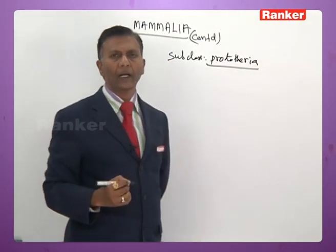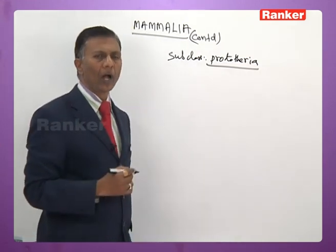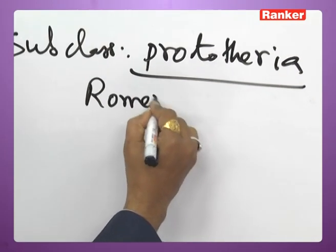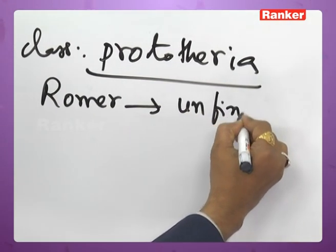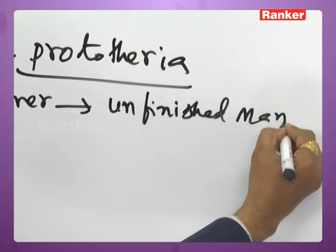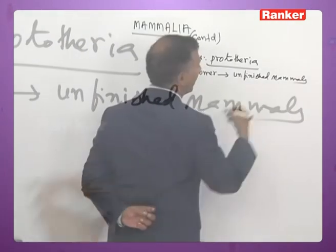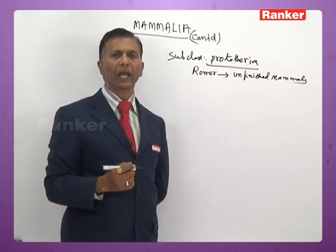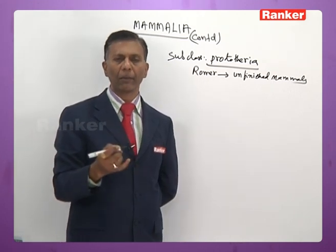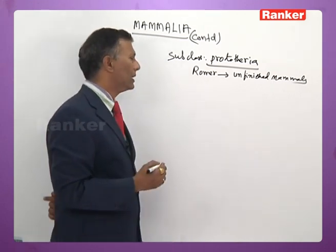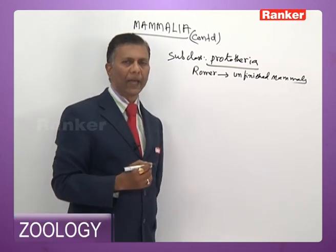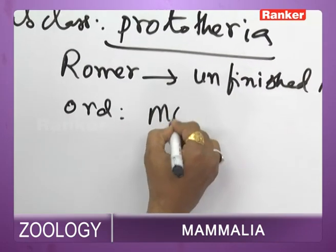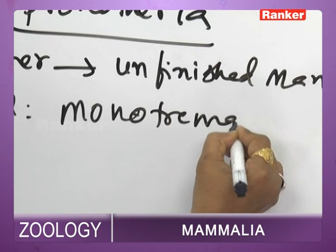Subclass Prototheria — prototherians are called 'unfinished mammals' as they exhibit both reptilian and mammalian characters, making them the connecting link between Mammalia and Reptilia. Prototheria includes a single order: Order Monotremata.